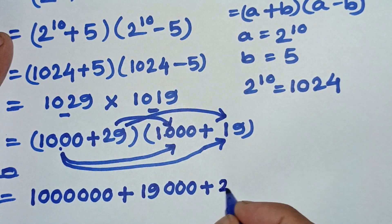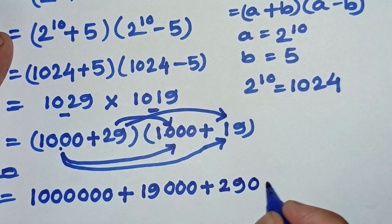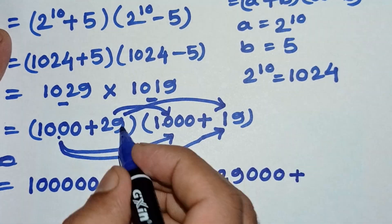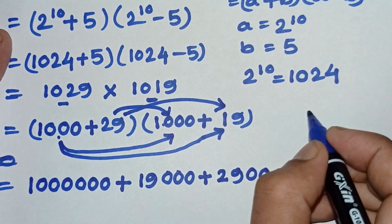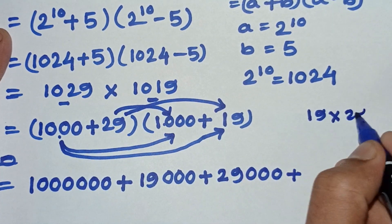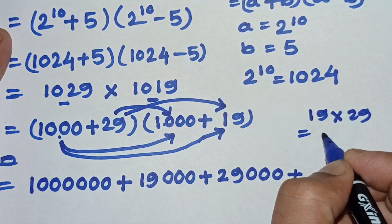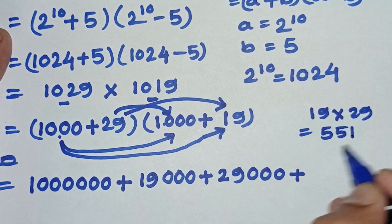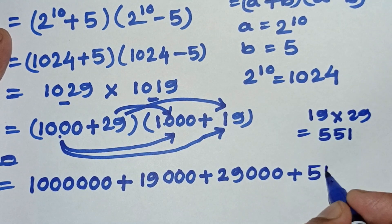Plus 19 into 29 is 551. We can multiply this easily without a calculator.